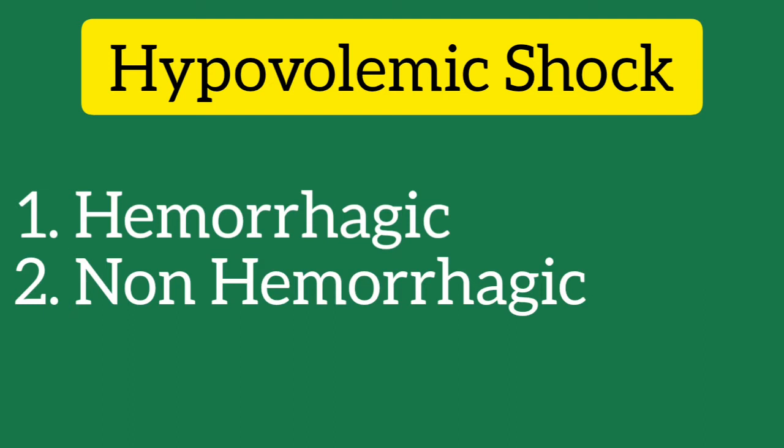Common causes of non-hemorrhagic hypovolemic shock include GI losses in the setting of vomiting, diarrhea, nasogastric suction, or drains. Renal losses due to medication-induced diuresis or endocrine disorders such as hypoaldosteronism. Skin losses as in burns, Stevens-Johnson syndrome, toxic epidermal necrolysis, heat stroke, and pyrexia. Third space loss in the setting of pancreatitis, cirrhosis, intestinal obstruction, and trauma.